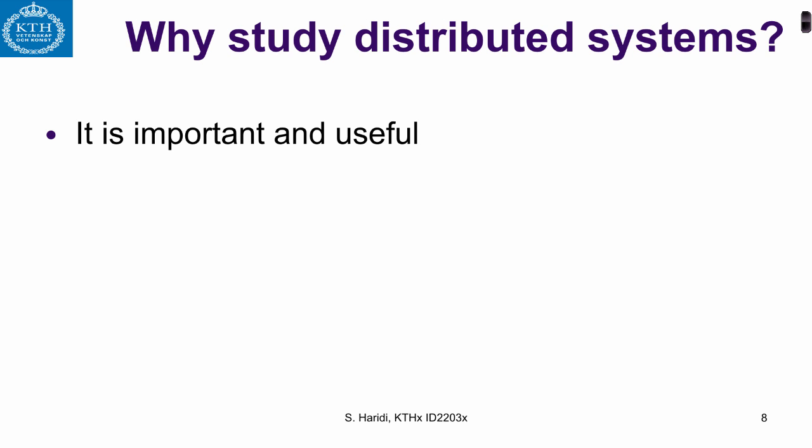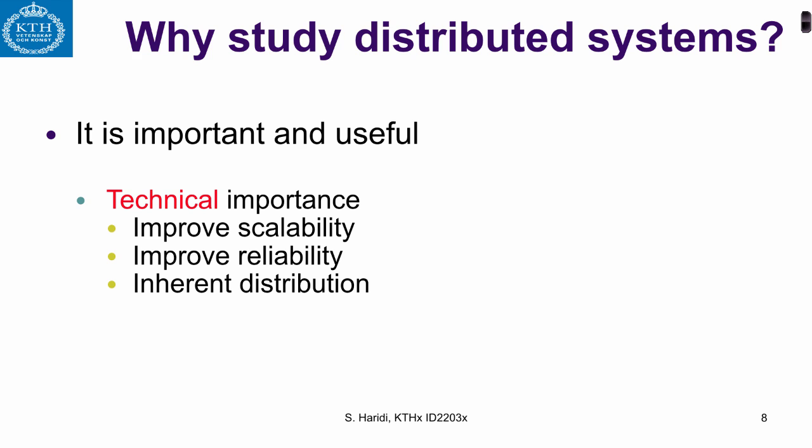Distributed systems are important from a technical perspective where they can improve the scalability of a system, reliability, and can support inherent distributions. Scalability is the use of a network of servers to serve multiple users and requests, thereby scaling the number of requests that can be served. Reliability is replication of the same service on multiple machines, so if some fail, the others will carry on. Geographic distribution, or geodistribution, can be found in peer-to-peer networks, distributed sensor networks, or multi-data centers where data are distributed across multiple data centers and because of legal reasons, you cannot move the data.